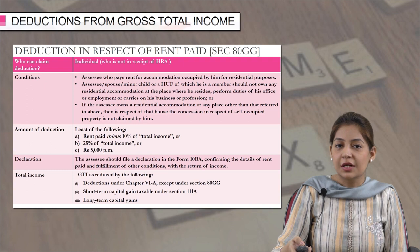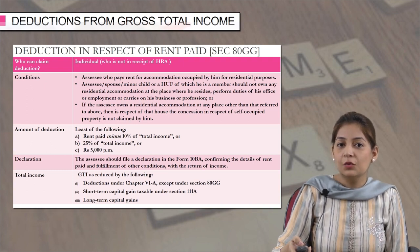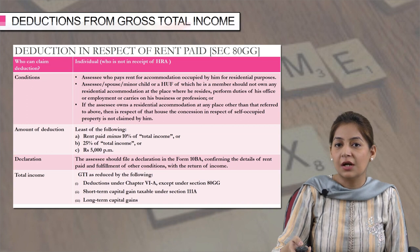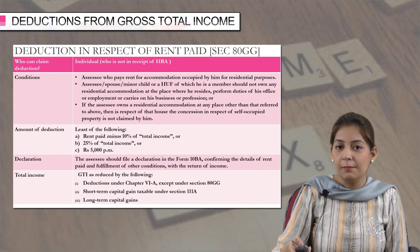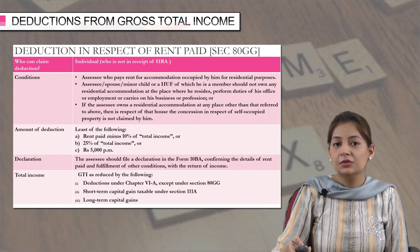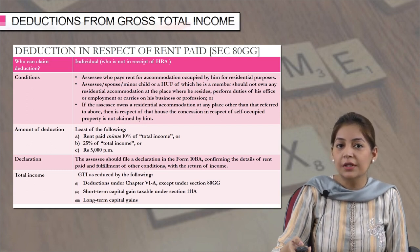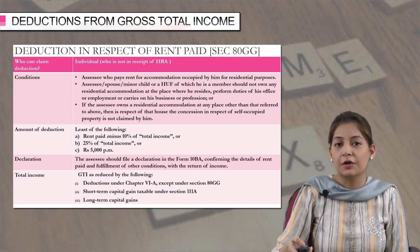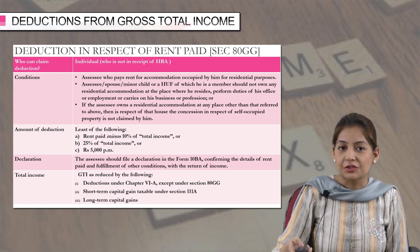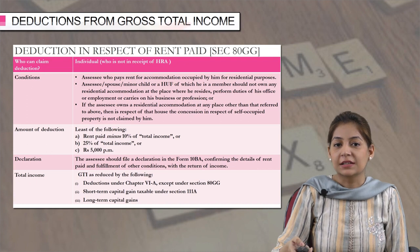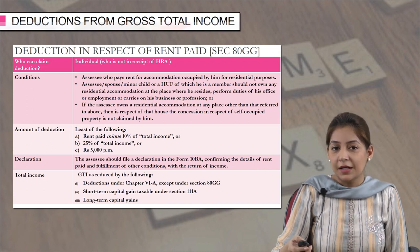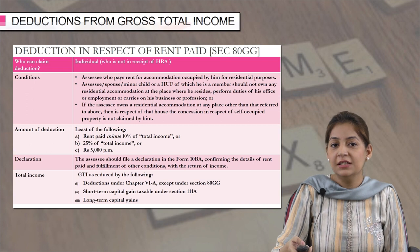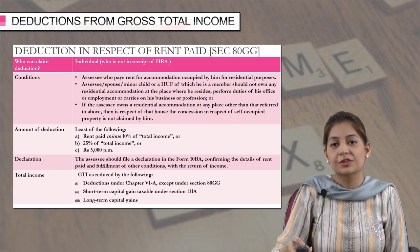Next, the assessee, or his or her spouse or minor children, or if he is a member of a HUF, the HUF should not own any residential accommodation at the place where he resides or performs his duties of office or employment or carries on his business or profession. The deductible amount is the least of the following three amounts.